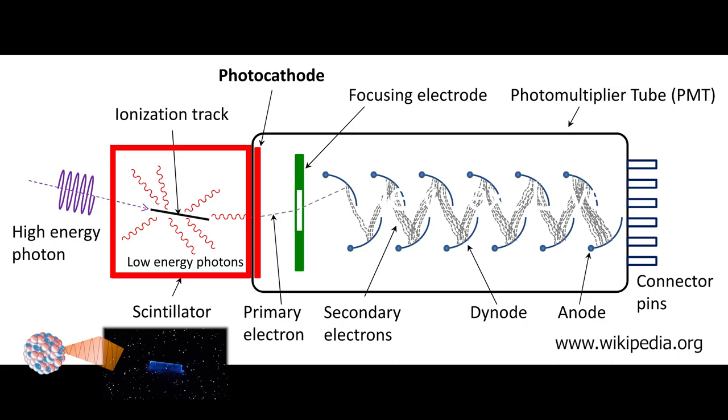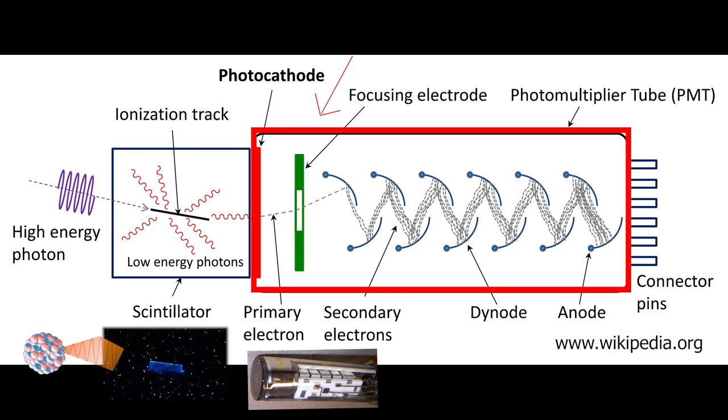Here the photons are represented by this wiggly line pointed towards the scintillator, which is the thing inside the red square on the picture. And when they reach the scintillator they deposit their energy.